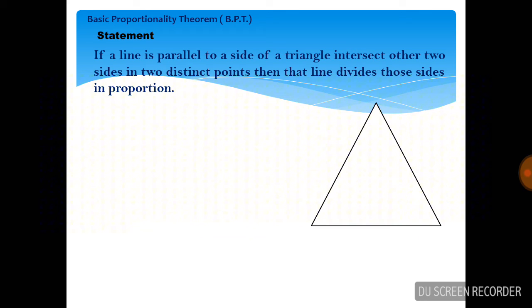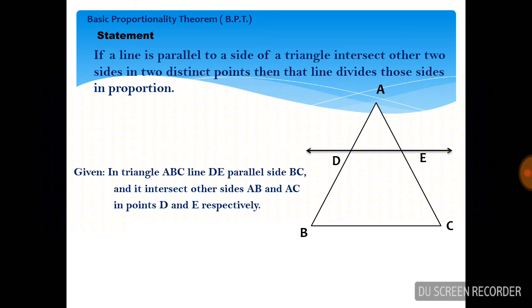The 'if' part: a line is parallel to a side of a triangle. We will draw a triangle named ABC, and draw line DE parallel to side BC. So in triangle ABC, line DE is parallel to side BC. In the given, we mention: the name of the triangle, the name of the line, to which side it is parallel, and which two sides it intersects. Line DE intersects sides AB and AC at two distinct points D and E respectively.